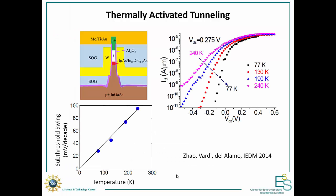One major problem that's shown up in many of the experimental results is that the tunneling is actually thermally activated. Here's the steepness at room temperature, and as you cool the device down, it starts to get steeper and steeper. If we look at the subthreshold swing versus temperature, we can see that the swing is directly proportional to temperature, and it extrapolates down to zero.